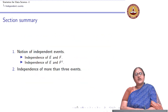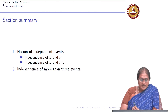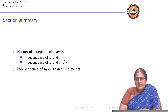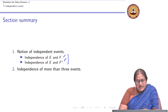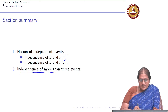In summary, we introduced the important notion of independent events. We looked at the independence of E and F, and of E and F complement — namely that the occurrence of E is independent of both the occurrence and non-occurrence of F. We also extended the notion of independence to more than 3 events.